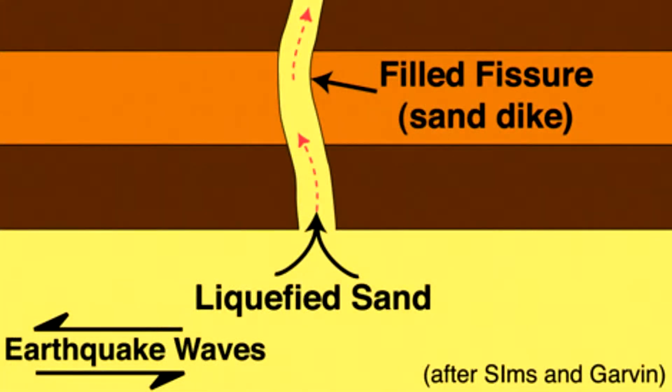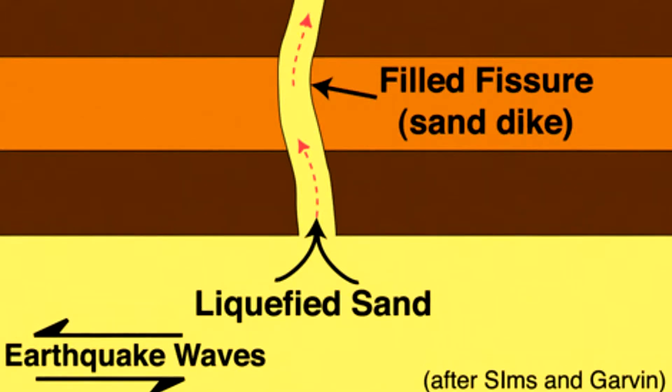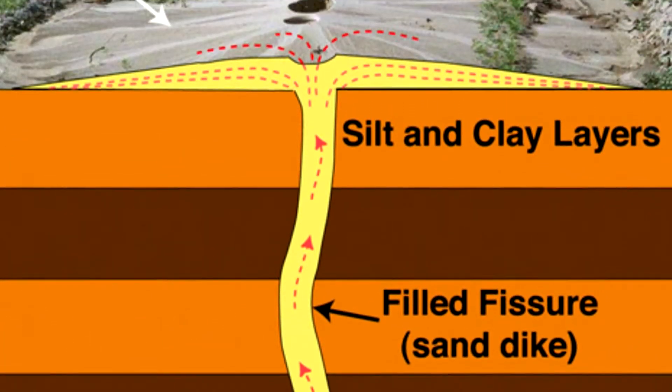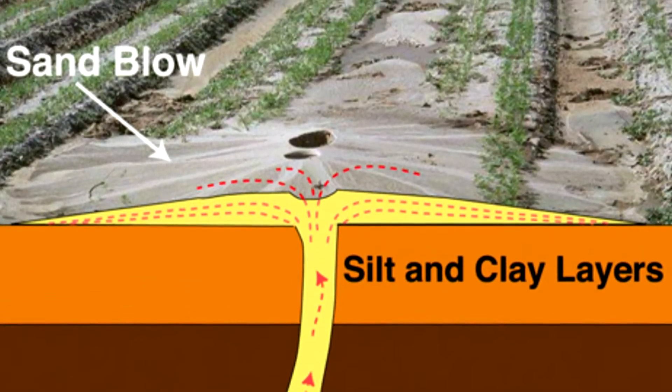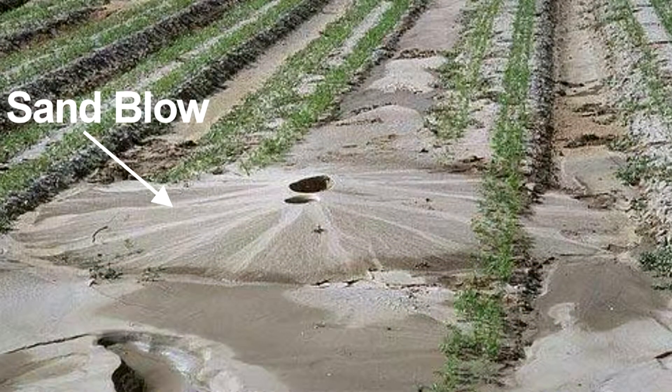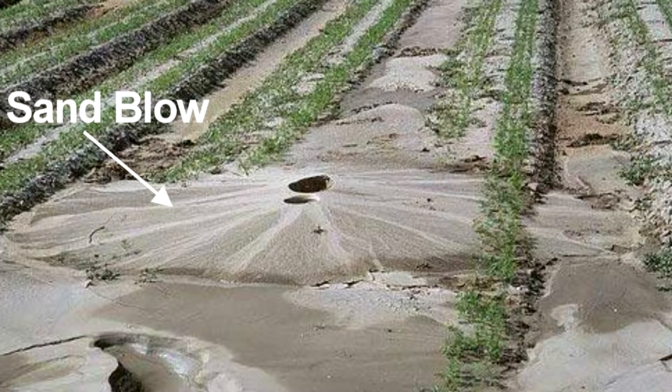Earthquakes, especially the larger earthquakes — those that are greater than magnitude 5 — can induce what's called liquefaction of sand layers at depth. So if there's an earthquake of magnitude 5 or greater and there are sands below the surface that are saturated with water, if they're shaken strong enough and large enough, they can liquefy. And that liquefied sand and water are brought to the surface.